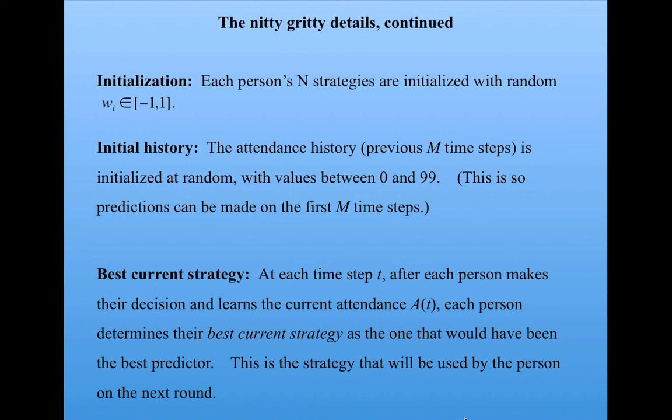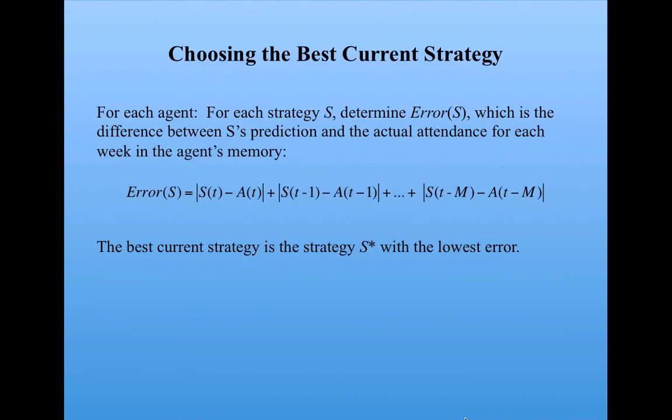And here's how the best current strategy is determined. At each time step, after each person makes a decision, they then learn the current attendance at that time step. Then they determine which strategy would have been the best predictor. This strategy would be used by that person on the next round. So how they do that is as follows.